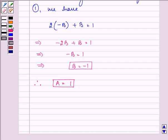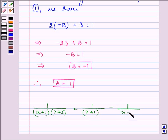Now on substituting the values of A and B, we get 1 over x plus 1 into x plus 2 is equal to A upon x plus 1, the value of A is 1, minus 1 upon x plus 2, since the value of B was minus 1.